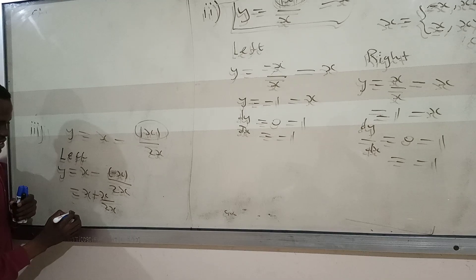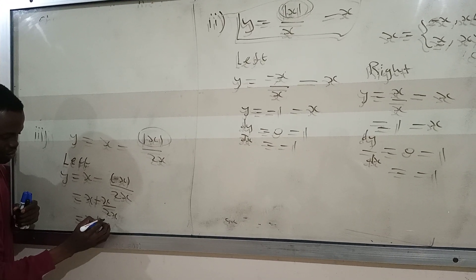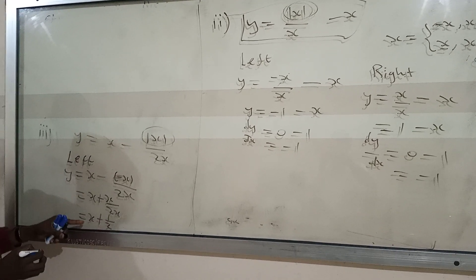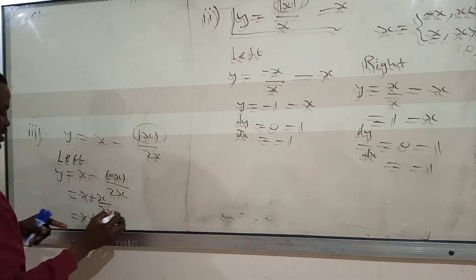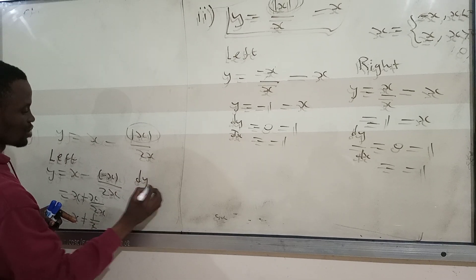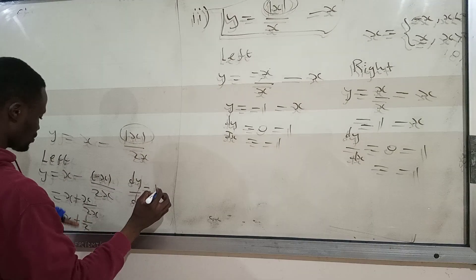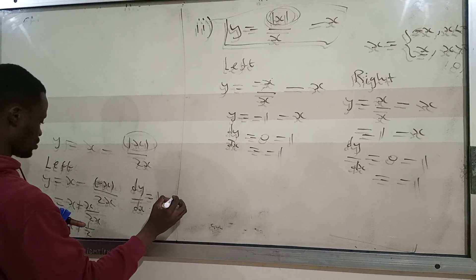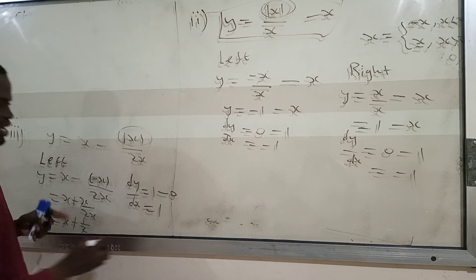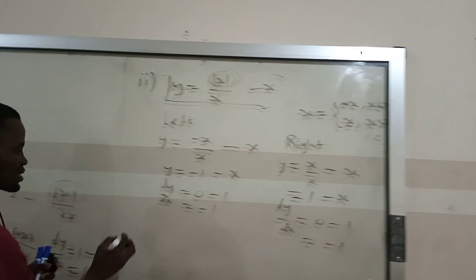After the cancellation, we get y equals x plus 1/2. Then finding dy/dx from the left hand side gives 1 minus 0, so the answer is 1. We keep that result and move to the right hand side.